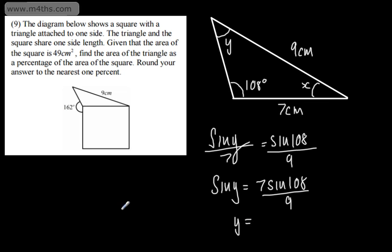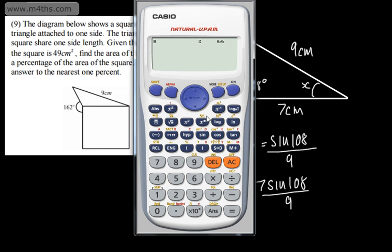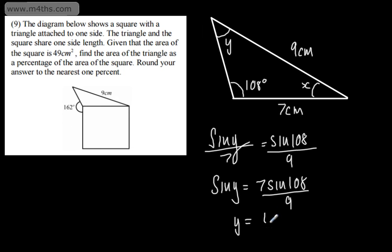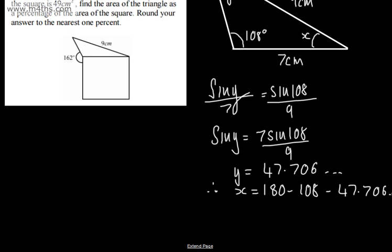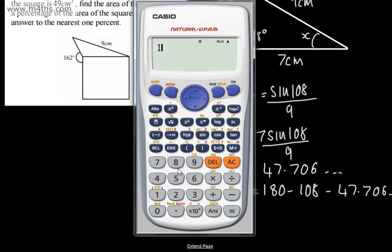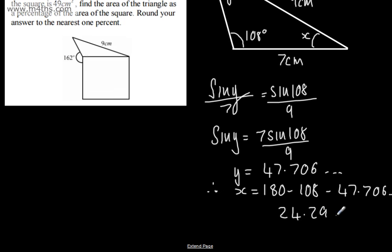So sine Y equals sine 108 divided by 9. Taking the inverse sine of both sides on the calculator — shift sine, that's sine to the negative 1 — sine of 108 divided by 9 gives me 47.706. So Y is 47.706°, therefore X is equal to 180 minus 108 minus 47.706, which gives us 24.29°.